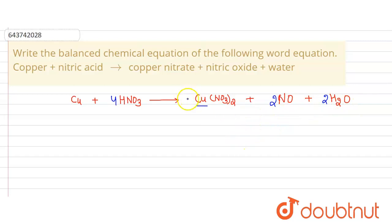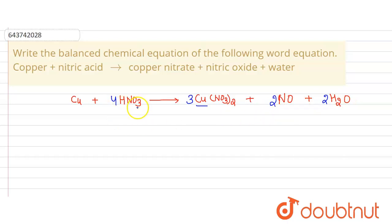If we multiply by 3, then 6 × 3 = 18 oxygen atoms on this side. Then 18 + 2 + 2 + 2 + 2 = 24. Multiplying by 8 balances both nitrogen and oxygen.